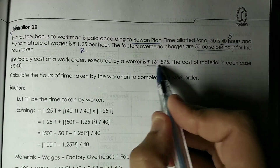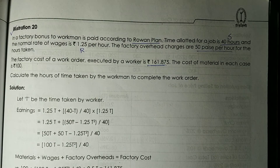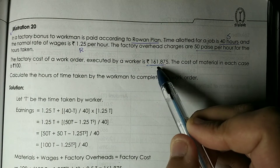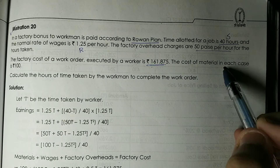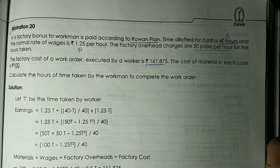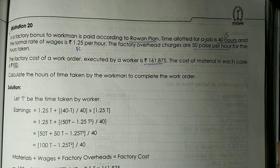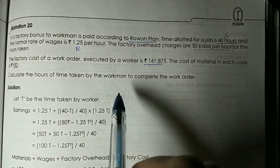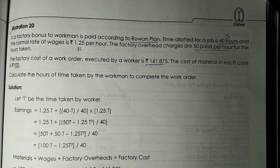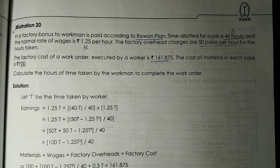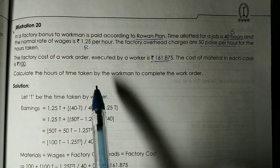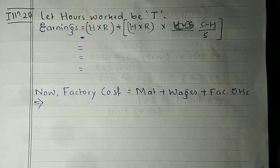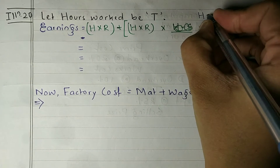The total factory cost of a work order executed by a worker is Rs. 161.875, which is prime cost plus factory overhead combined. The cost of material is Rs. 100. We need to find wages and factory overheads, and calculate the actual hours of time taken by the workman to complete the work order — that is, find the value of H (actual hours).